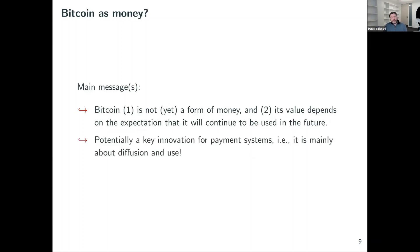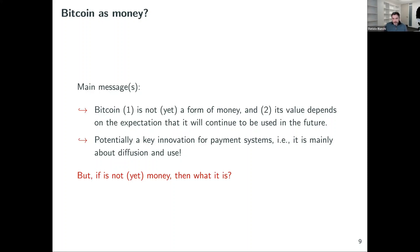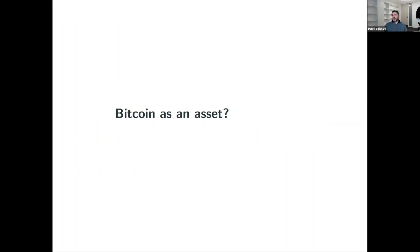That said, Bitcoin is potentially a key innovation for payment systems. The absence of a central authority and intermediaries makes the system relatively more robust compared to centralized systems — at least that's the value proposition of adopters and developers. Its main value is actually linked to diffusion and adoption. But if it's not yet money, how should we think about Bitcoin? The way the industry is moving is really thinking about Bitcoin — and cryptocurrencies more broadly — as an asset.